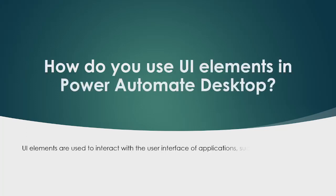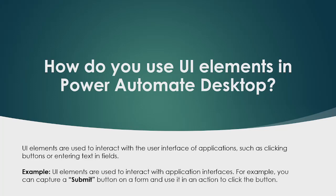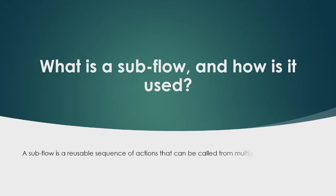The next question is: how do you use UI elements in Power Automate Desktop? UI elements are used to interact with the user interface of applications, such as clicking buttons or entering text in fields. For example, you can capture a 'Submit' button on a form and use it in an action to click that button.